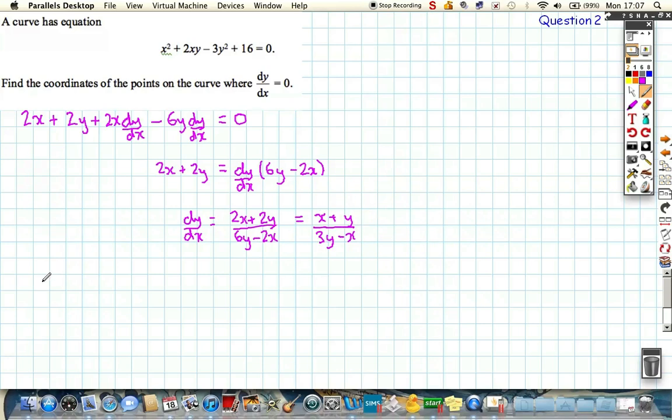Now when the gradient of the curve is 0, dy/dx is 0, that implies that x plus y over 3y minus x is equal to 0, or the numerator of that x plus y is equal to 0, which means that y must be minus x. So when the gradient is 0, y is equal to minus x.